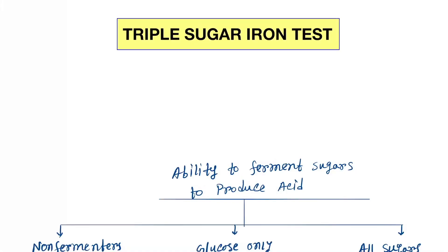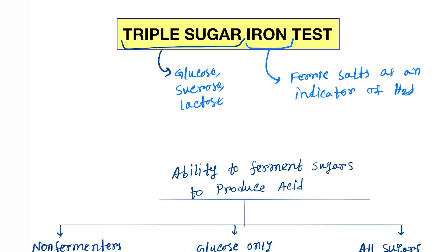Hello friends, today our topic is the triple sugar iron test. Triple sugar implies the three sugars: glucose, sucrose, and lactose. Iron refers to ferric salts as an indicator of H2S. We mainly perform the TSI test for gram-negative bacteria.